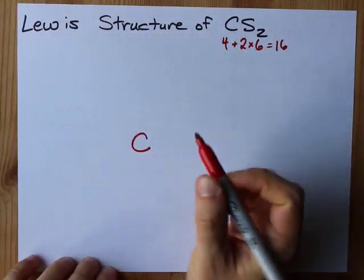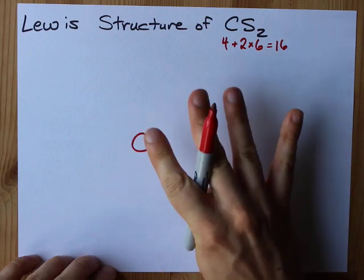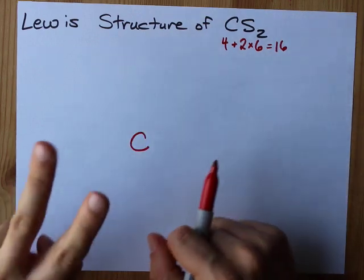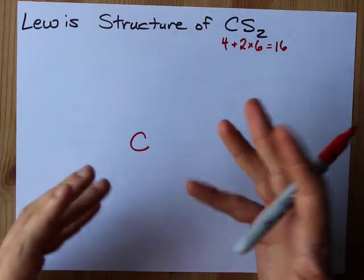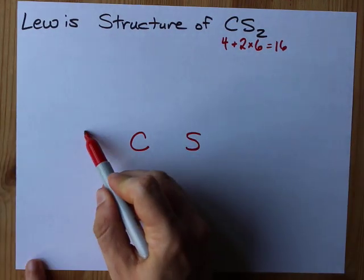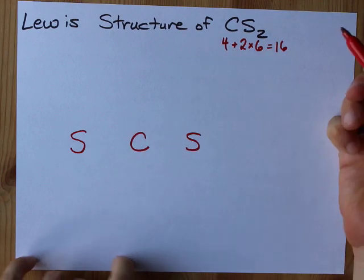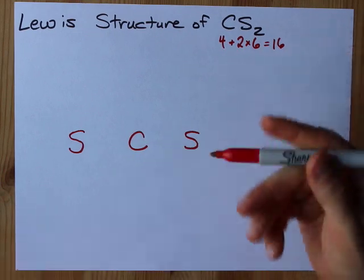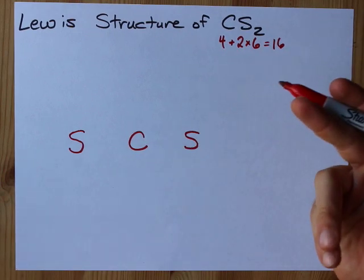I'm going to put my carbon in the center because carbon can make up to four bonds and sulfur can generally make up to two bonds when it's in an organic compound at least. So I'm going to put my sulfurs on the outside. This might remind you of CO2, by the way, and if it does, well then, spoiler alert, it's the exact same thing.